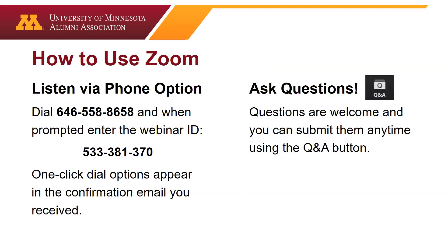If you're new to using the Zoom webinar technology, a couple of things to share. You've most likely joined using your computer's audio system. But if you want, you can also listen over the phone by dialing the number displayed on the screen and entering the webinar ID. This information should have also appeared in the confirmation email you received. Questions are welcome and you can submit them at any time using the Q&A button.